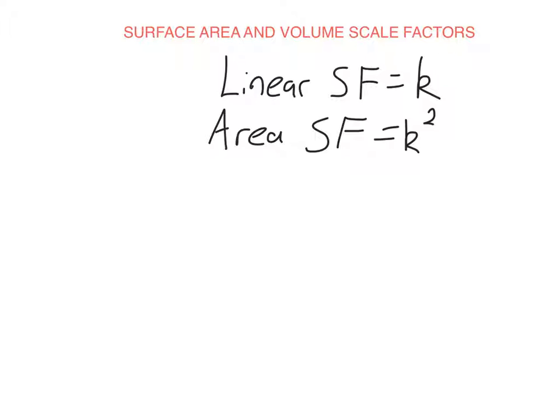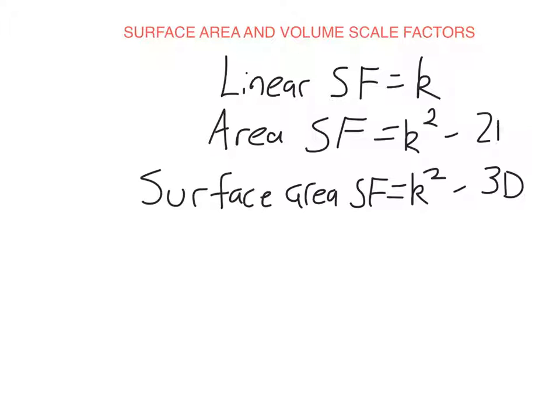Now it turns out that the scale factor for area is the same as for surface area. So the surface area scale factor is also k squared. Of course now we're looking at 3D shapes. So 2D shapes have area and 3D shapes have surface area. So what this means is if I multiply say the lengths of each side of a rectangular prism by 2, the surface area will be multiplied by 2 squared which is 4.